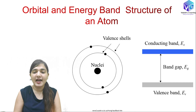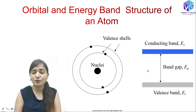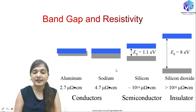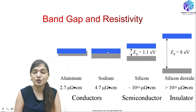In the energy band diagram, we have a valence band and an electron. Some energy is required for the electron to jump to the conduction band — this is called the energy gap. The band gap is the energy difference between the valence band (EV) and the conduction band (EC). Different materials have different band gaps.